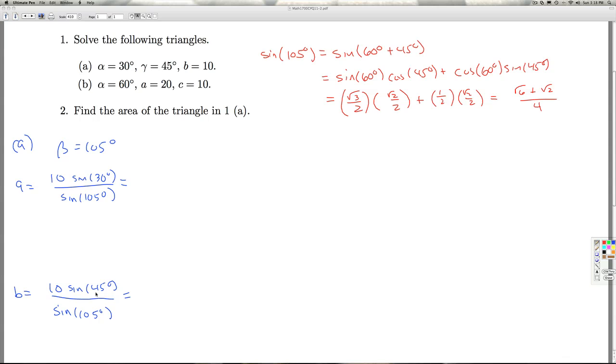And I know the sine of 30 and the sine of 45. So I've got 10 sine of 30, which is 1 half, divided by this. Which is 5 times, or 5 over 1 rather, that's the numerator, times the reciprocal of this.